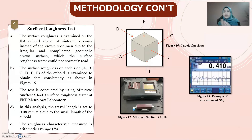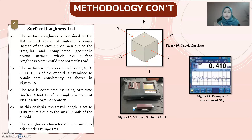The fourth step is the surface roughness test. Surface roughness is examined on a flat cuboid-shaped sintered zirconia specimen instead of the crown specimen, because the complicated geometric crown surface cannot be measured correctly. The surface roughness on the cuboid is examined on each of its sides, as shown in Figure 16, to obtain data consistency. The test is conducted using the Mitutoyo Surf Test. The surface roughness is tested at the FKP lab, as shown in Figure 17. The travel length is set to 0.08 mm × 3 due to the small length of the cuboid, and the roughness characteristic measured is the arithmetic average, Ra. Figure 18 shows an example of the measurement.